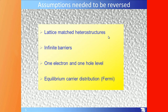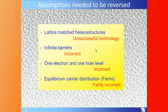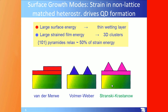The theoretical work was based on lattice-matched heterostructures, infinite barriers, only one electron and one hole level, and equilibrium carrier distribution — a Fermi distribution. That was unsuccessful. Infinite barriers are incorrect, one electron/one hole level is incorrect, and equilibrium carrier distribution was incorrect at lower temperatures and partly incorrect even at room temperature.